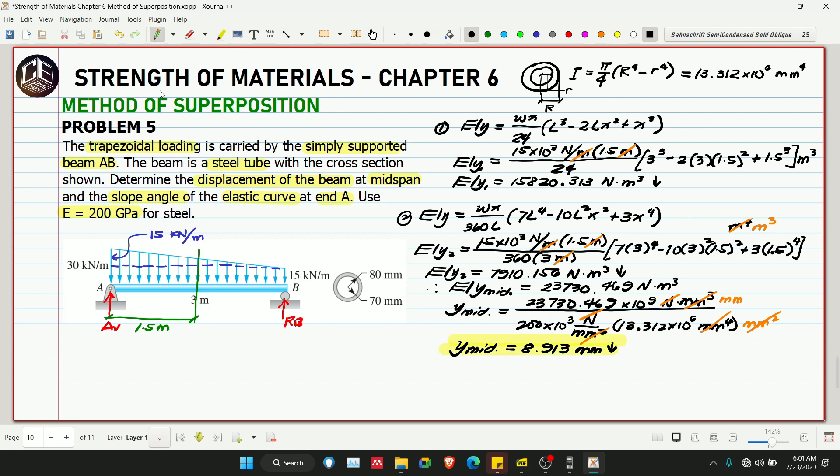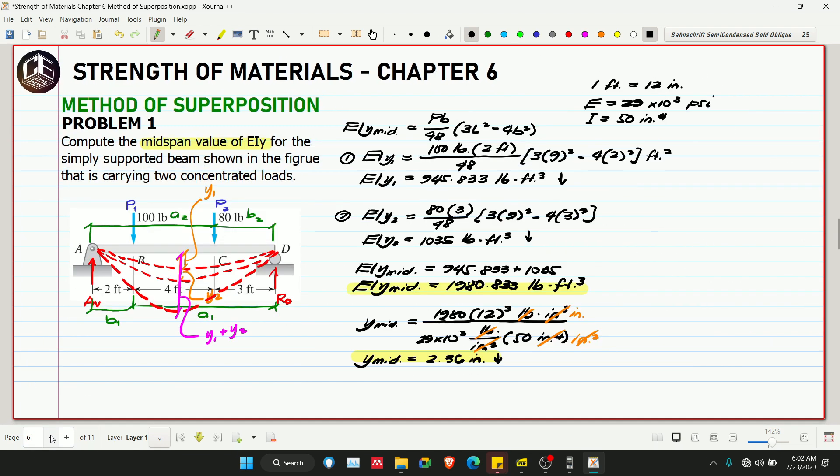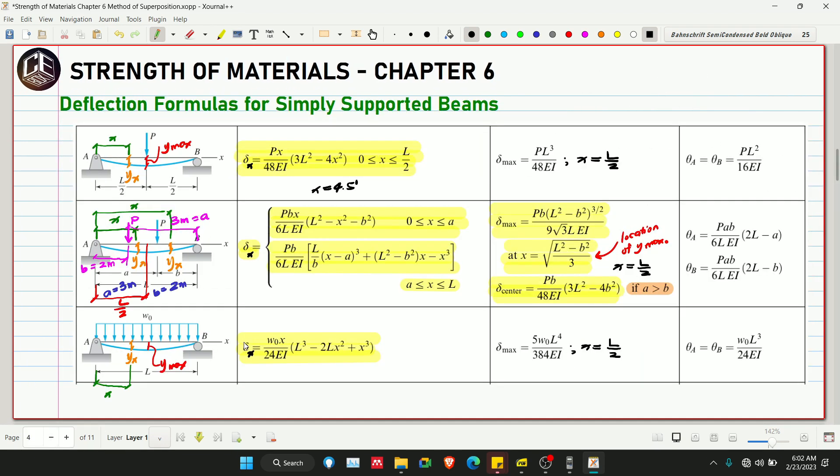Next is the slope angle at point A. At point A, we need to find theta with respect to the x-axis. This is just a combination of equations. So the slope at A, EI theta A is equivalent to, let me check the equation.